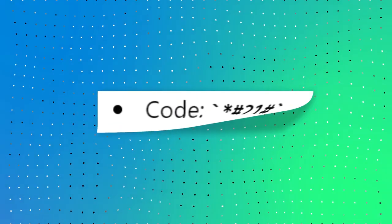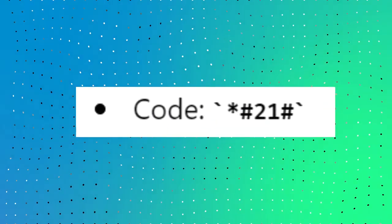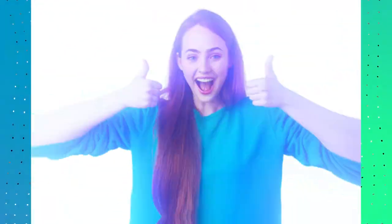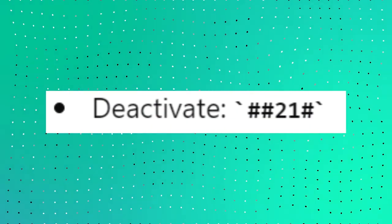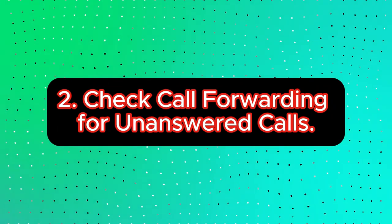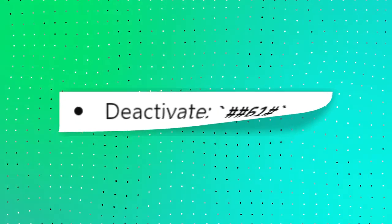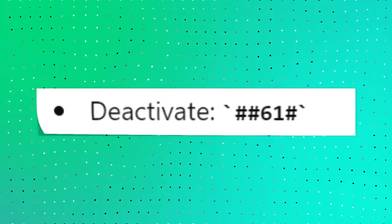To check if your calls are being forwarded, press *#21# and to deactivate it press ##21#. To check if your calls are being forwarded when unanswered, press *#61# and to deactivate it press ##61#.